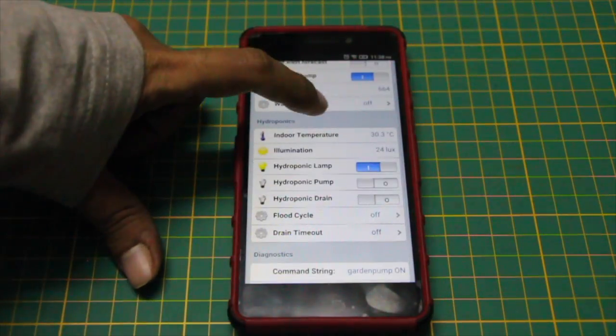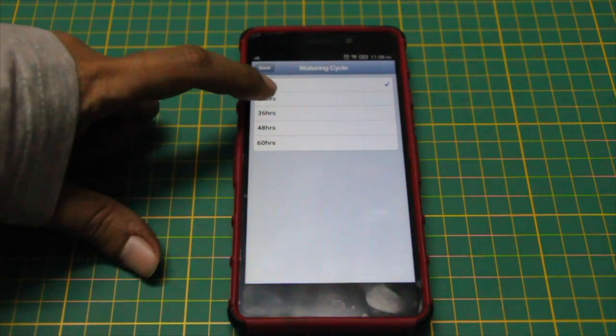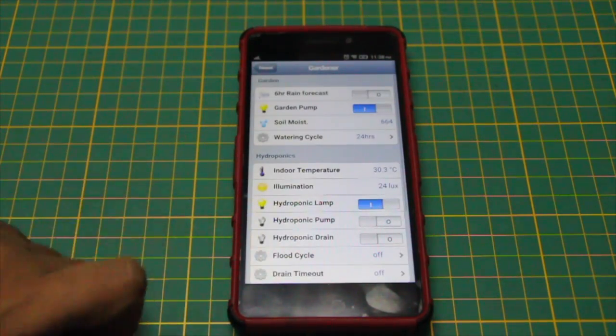The hydroponic irrigation cycles can be configured using the GUI. It's very simple.